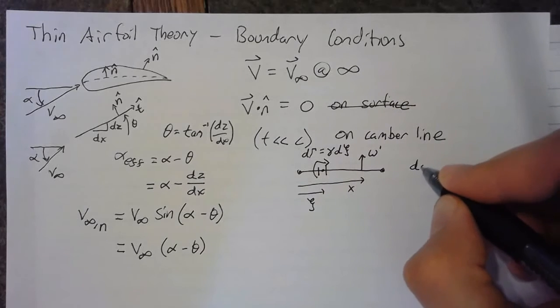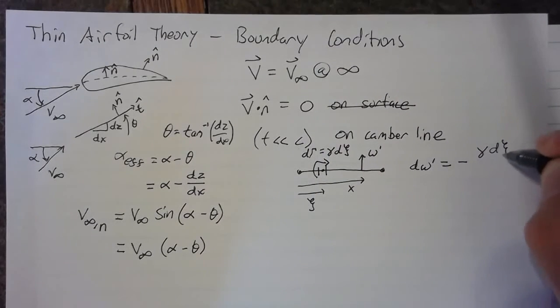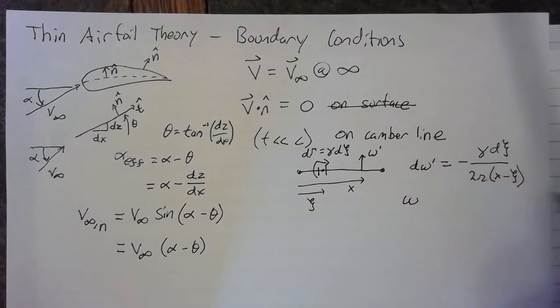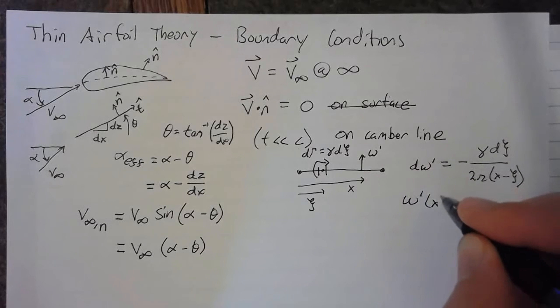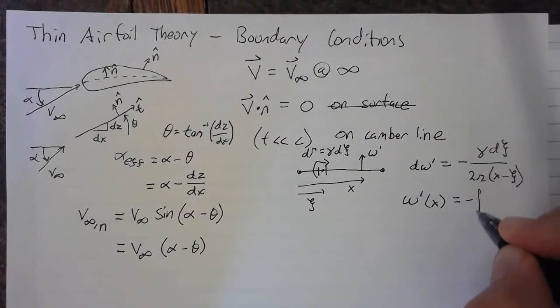So, the contribution of the upwash of this vortex core is going to be negative gamma d xi over 2 pi times the distance x minus xi. So, this means that the sum of all of these components is going to be the total upwash as a function of x, and that's going to be the negative integral from 0 to c of gamma d xi over 2 pi times x minus xi.